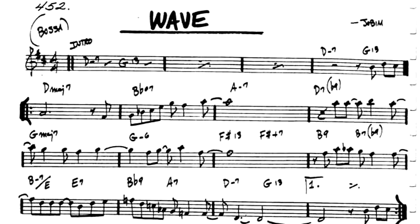In bar 4 we have a IV major 7 chord that's followed by a IV minor 6 in bar 5. This is a good example of what's called modal interchange. The IV minor 6 is borrowed from the parallel minor key, which would be D minor.